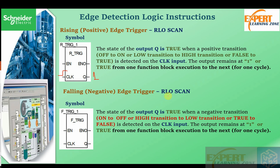Next is the falling or negative edge trigger, which is the direct opposite of the rising edge trigger. The state of the output is true when a negative transition — on to off, high to low, or true to false — is detected on the clock input. The output remains at one for one function block execution, that is one cycle. If there is a change in the clock signal from logic one to logic zero, the output becomes one for one clock cycle. You can assemble all the logic on the left side of the block to evaluate the change.